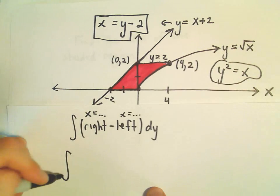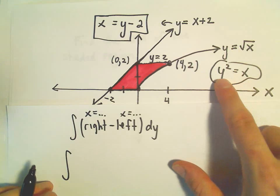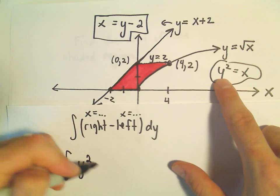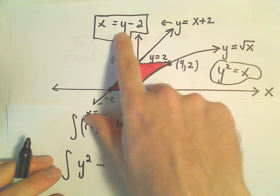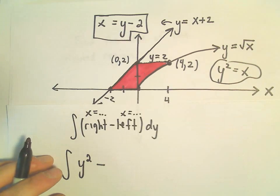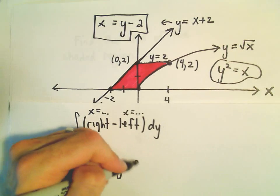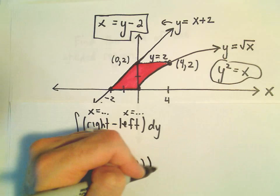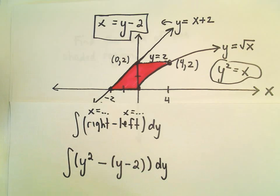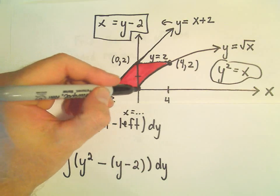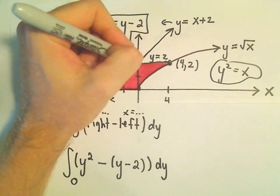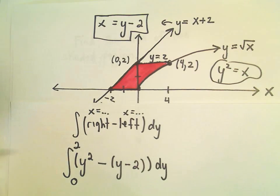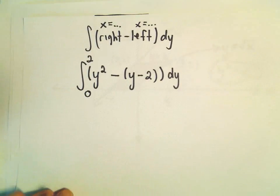All right, so now if we do the rightmost curve, well, the rightmost curve would be x equals y squared minus the leftmost curve, which would be x equals y minus 2. So this is what we're integrating with respect to y. The smallest y-coordinate that gets used is 0. The largest y-coordinate that gets used is 2. So now this is the function that we're integrating.